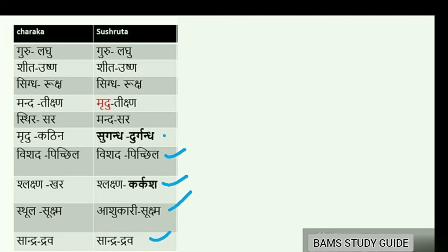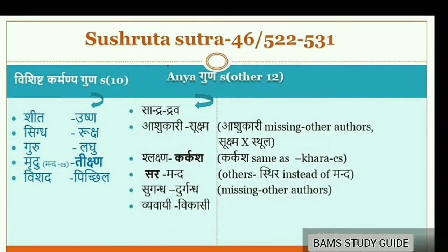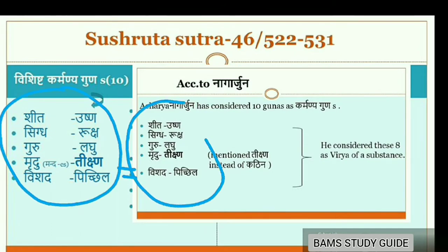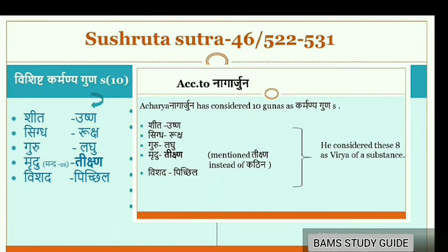Sushruta also mentioned Vyavai and Vikasi. Acharya Nagarjuna considered the first 10 Gunas as Vishishtakarmanya Gunas — that is, they have special capabilities and strength. These 10 are: Shita, Ushna, Snigdha, Ruksha, Guru, Laghu, Mridhu, Tikshna, Vishada and Pichila.